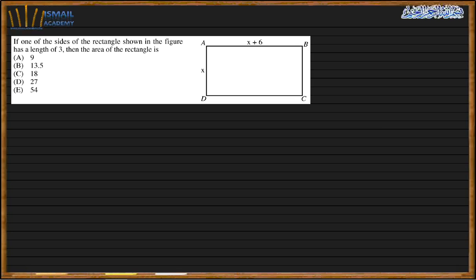Next question. If one side of the rectangle has length 3, then the other length must be 9, because the longer side is 6 making the proportion work out. The area of the rectangle is 3 × 9 = 27. The answer is D.